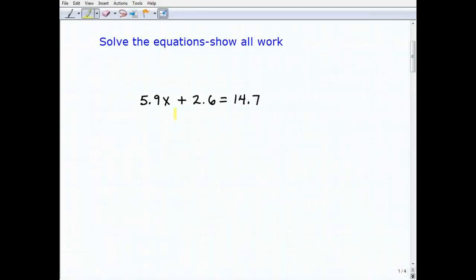All right, so let's go ahead and tackle our first problem here. The first thing I want to do is isolate my variable term, which is 5.9x. So to do that, I'm going to subtract 2.6 from both sides of the equation. Let's go ahead and have you work that out in your calculator. We'll have 5.9x, our 2.6s go away, and you're going to get 14.7 minus 2.6, and that's going to be 12.1.